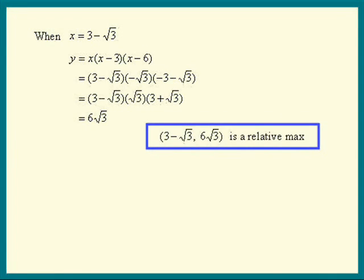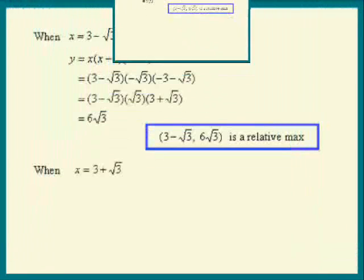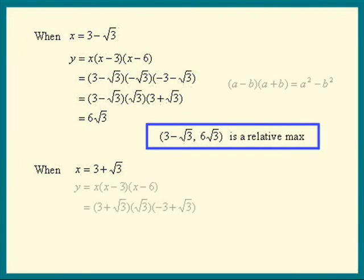Do the same for x equal to 3 plus square root 3. We can save ourselves some work if we notice this is very similar to the top. See the underlined parts? Those are the same. The only difference is a factor of negative 1. So in this case, the y-coordinate is going to be negative 6 square root 3.